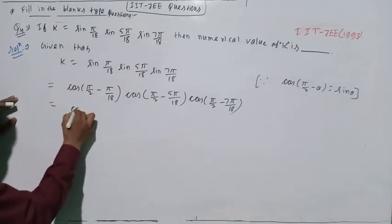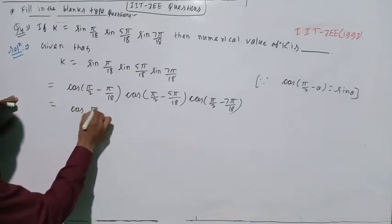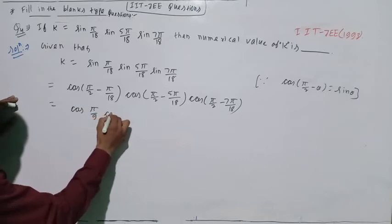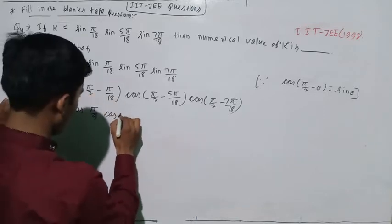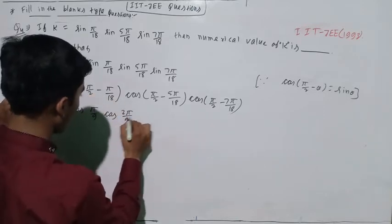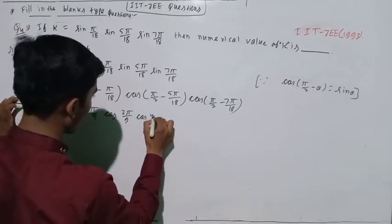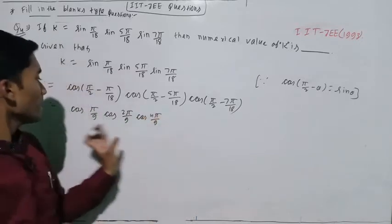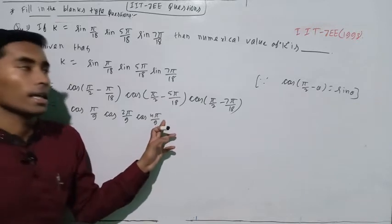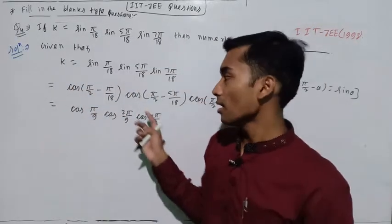If you simplify, it will be cos(π/9), cos(π/9), cos(4π/9). This is the series in the product form of the angle.